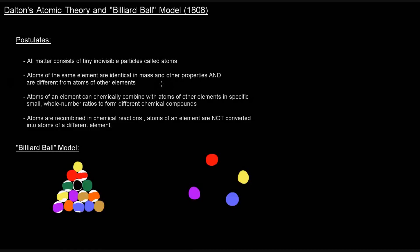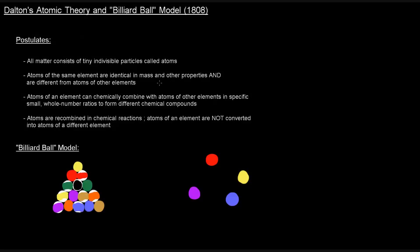So far I've kind of mentioned atoms here and there, but I haven't really talked about what they are or how we came up with them. So we're going to start things off by talking about Dalton's atomic theory and billiard ball model, which he started in 1808.